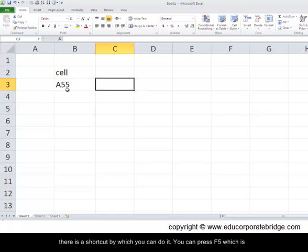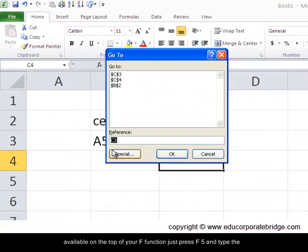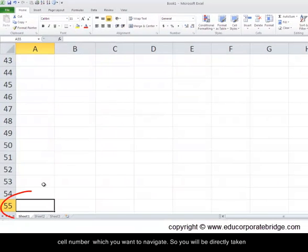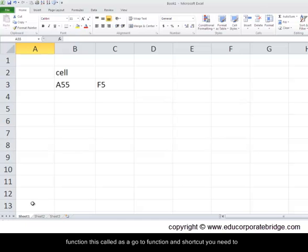You can press F5 which is available on the top of your F functions. Just press F5 and type the cell number which you want to navigate. So you will be directly taken to this cell where you really want to go. So this is a utility of a go to function.